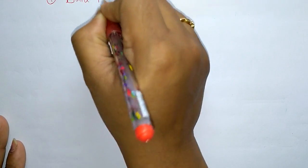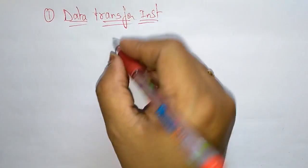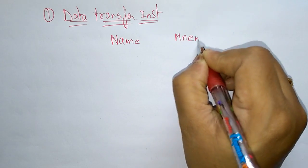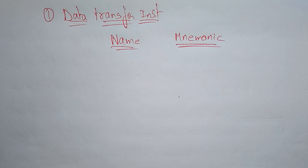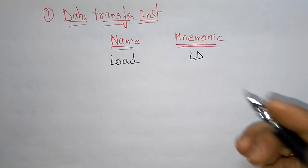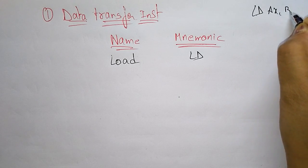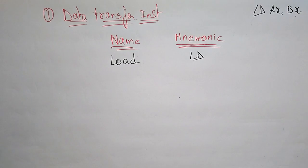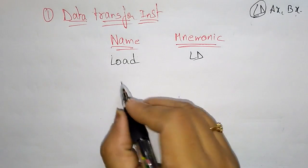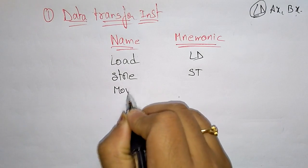Now let us look at the data transfer instructions with their names and mnemonics. Load has the mnemonic LD — for example, LD AX, BX loads data from BX to AX. Store uses the mnemonic ST. Move uses the mnemonic MOV.